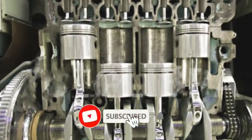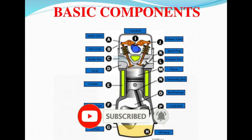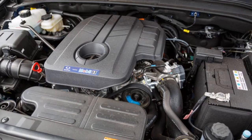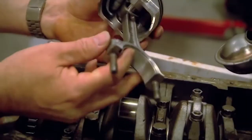The engine block is used with the cylinder, piston, and crankshafts. The engine block houses the cylinder, piston, and crankshafts.